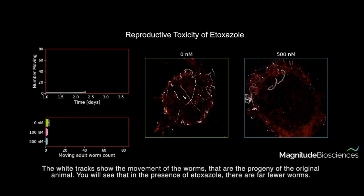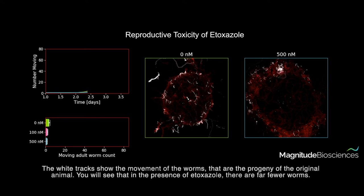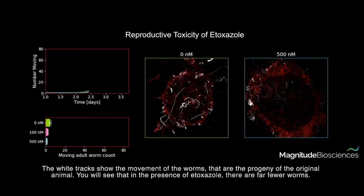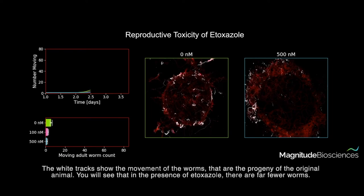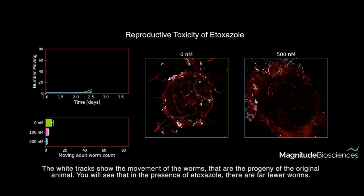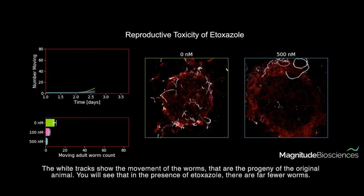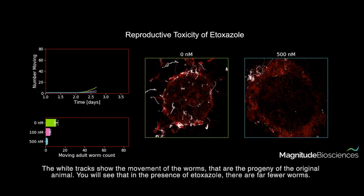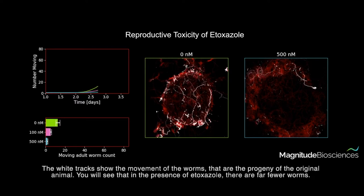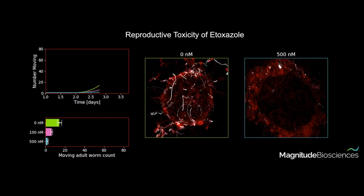The white tracks show the movement of the worms that are the progeny of the original animal. You will see that in the presence of etoxazole, there are far fewer worms.